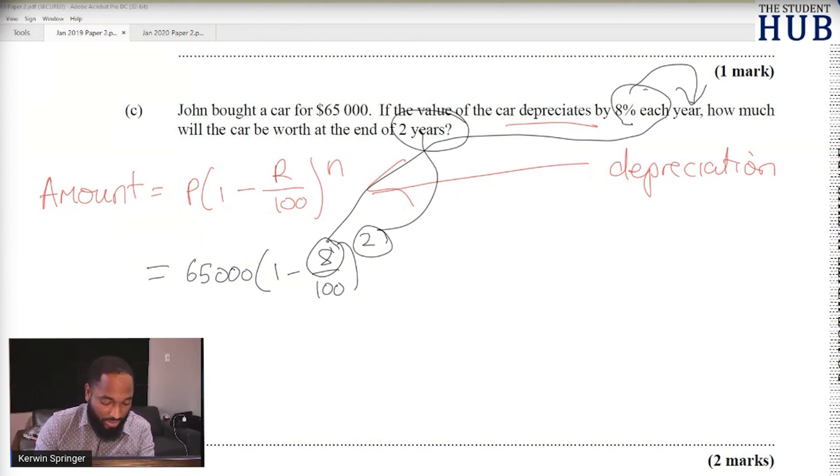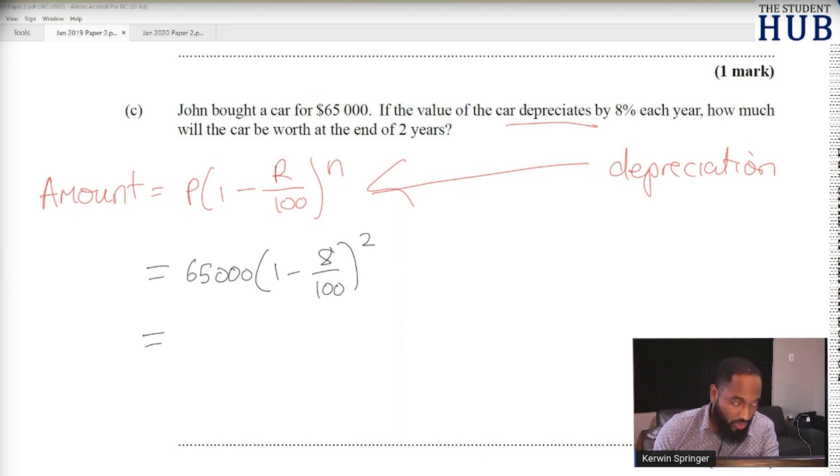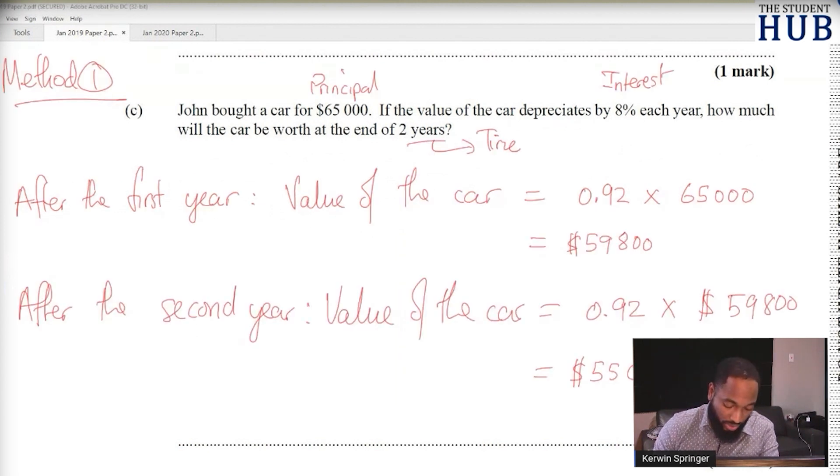Putting this straight into our calculator, we get the same $55,016. There was nothing saying round to the nearest thousand or anything like that, so we are safe with that answer.